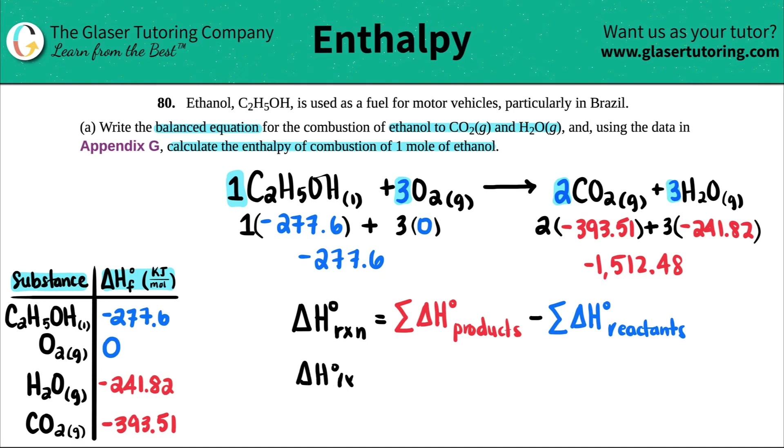Now we're just ready to find the delta H. Delta H for the reaction is the product number, negative 1512.48. And then I'm going to minus by a negative 277.6. And that's our enthalpy. So the delta H for the reaction is, drum roll, please. This is keep, change, change. Minus a negative is just adding a positive, if you want to think of it that way. So let's see. It's this number minus this number.